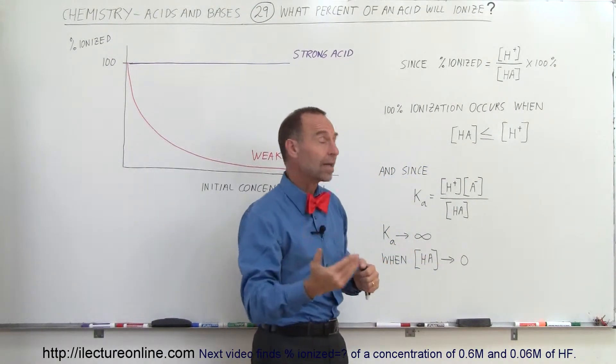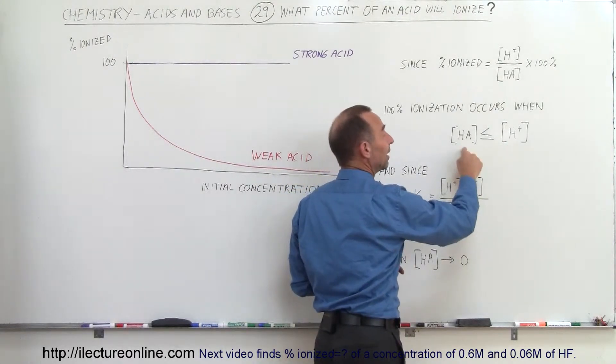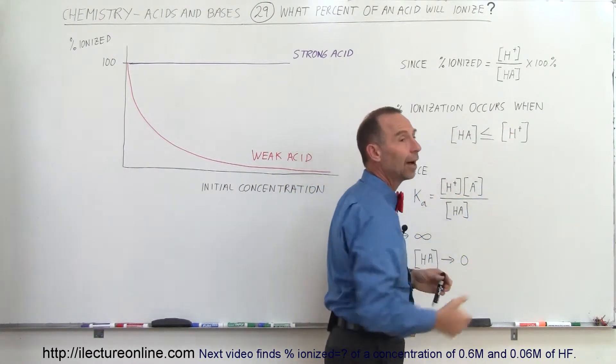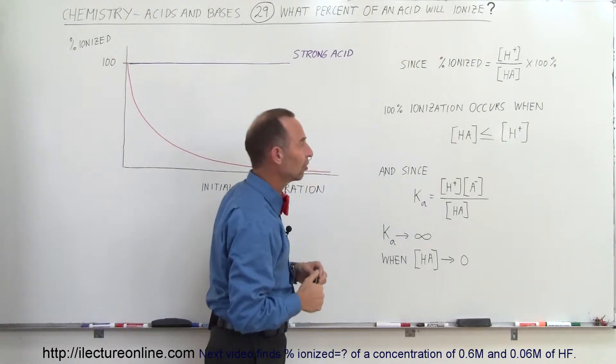So for a very strong acid, this will be much bigger than this, and therefore this always will be smaller. There will be 100% ionization there.